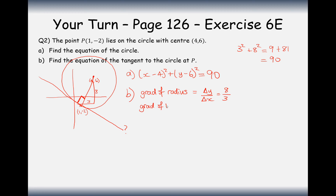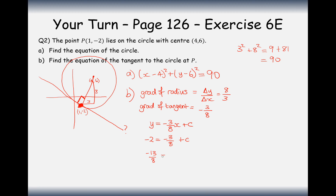The gradient of the tangent is the value that, when multiplied by 8/3, gives minus 1 — so that's -3/8. Another way is to negate and flip the fraction. So the gradient of the tangent is -3/8, giving y = -3/8 x + c. Substituting the coordinate P = (1, -2): -2 = -3/8 × 1 + c, which gives c = -13/8. So the equation of the tangent is y = -3/8 x - 13/8.